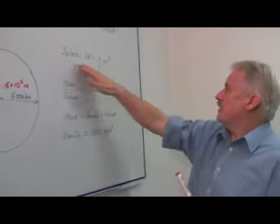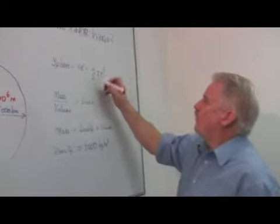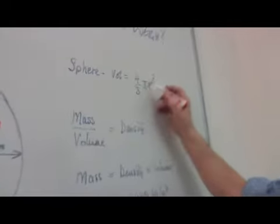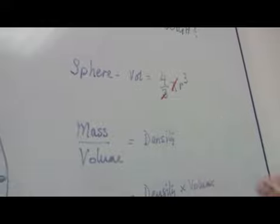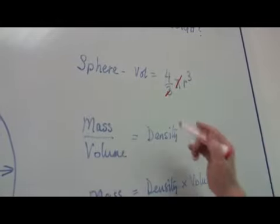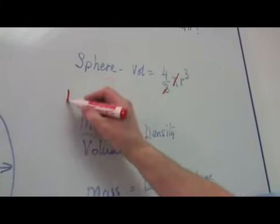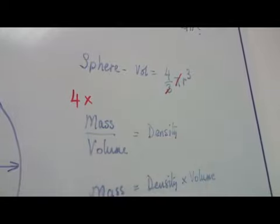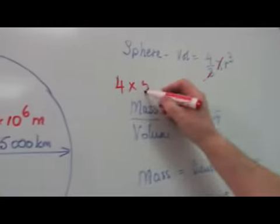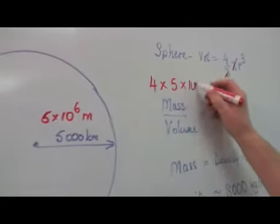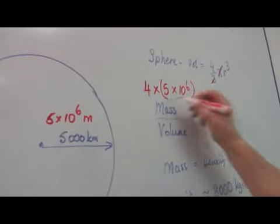So first of all, let's look at the volume of the sphere. 4 thirds pi r cubed. Well, pi and 3 are near enough the same. So it's 4 times the radius, which is 5 times 10 to the 6th, all of that cubed.